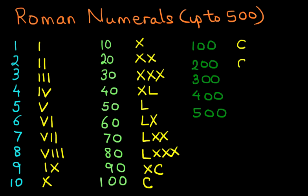200 is CC. It's 100 and another 100. 300 is CCC. So three C's is 300.